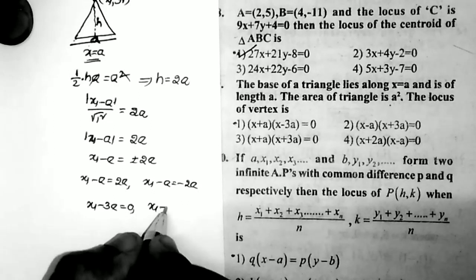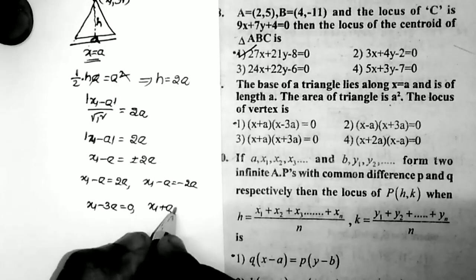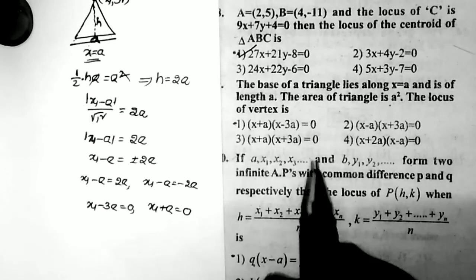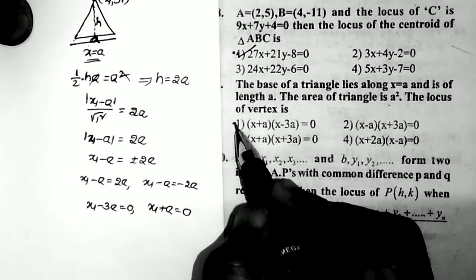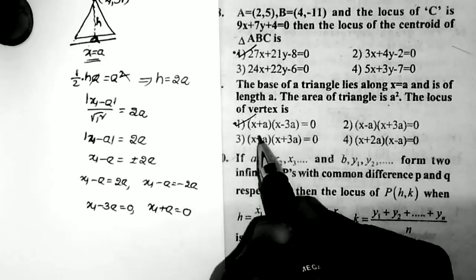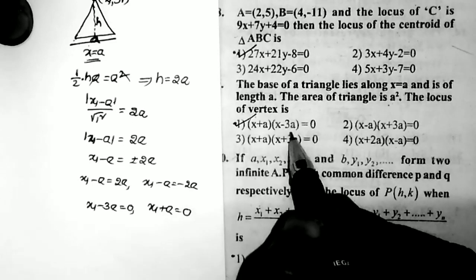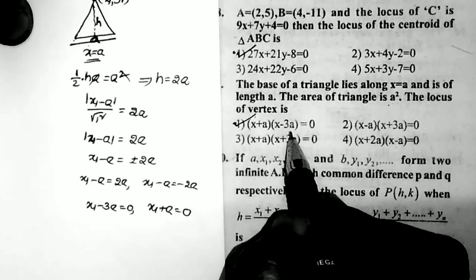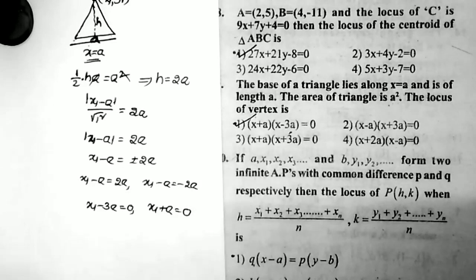The second case gives x₁ + a = 0. Therefore the answer is (x + a)(x - 3a) = 0, which is the first option — the correct answer.